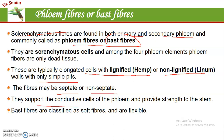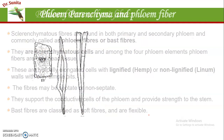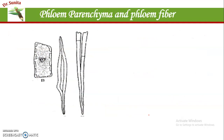Phloem fibers are supportive and conductive cells of the phloem and provide strength to the stem. On the basis of their texture, these are divided into two categories: soft fibers, which are flexible, and hard fibers. This is the structure of phloem parenchyma, and these are the structures of the phloem fibers.